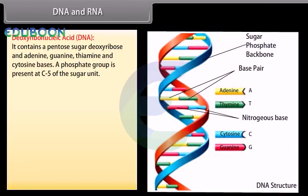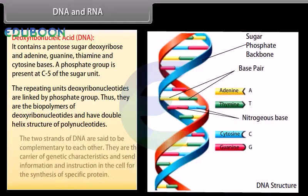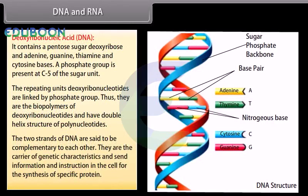Deoxyribonucleic acid (DNA) contains a pentose sugar deoxyribose, and the bases adenine, guanine, thymine and cytosine. A phosphate group is present at C5 of the sugar unit. The repeating units of deoxyribonucleotides are linked by phosphate groups. They are the biopolymers of deoxyribonucleotides and have a double helix structure of polynucleotides. The two strands of DNA are said to be complementary to each other. They are the carrier of genetic characteristics and send information and instructions to the cell for the synthesis of specific proteins.